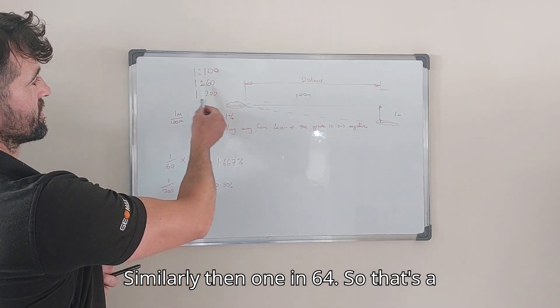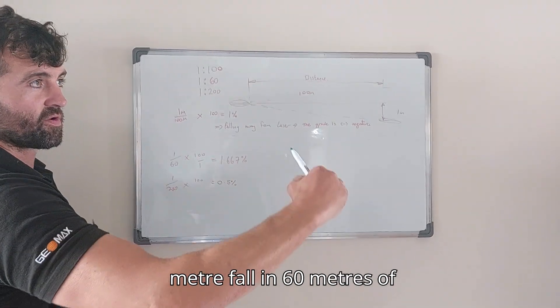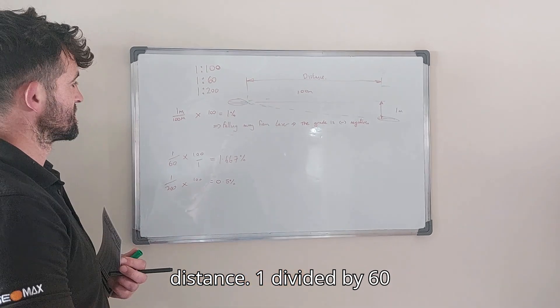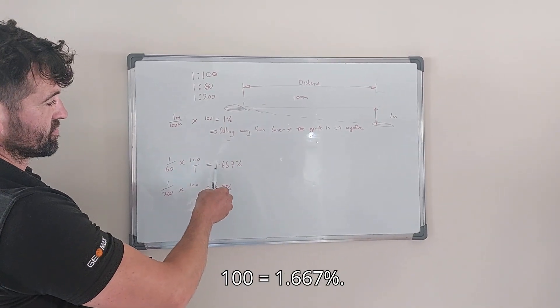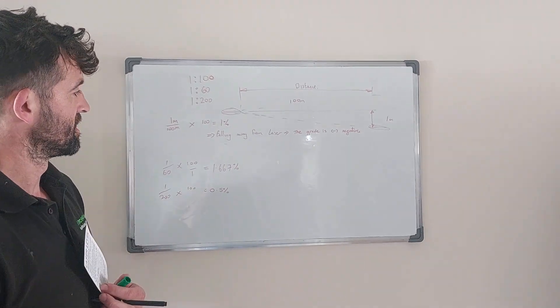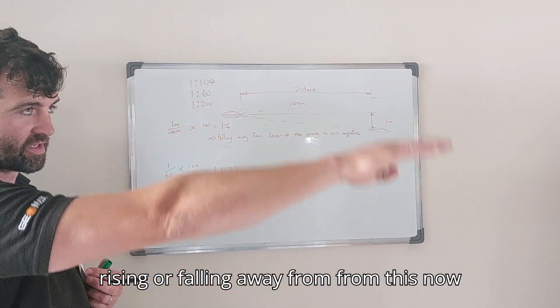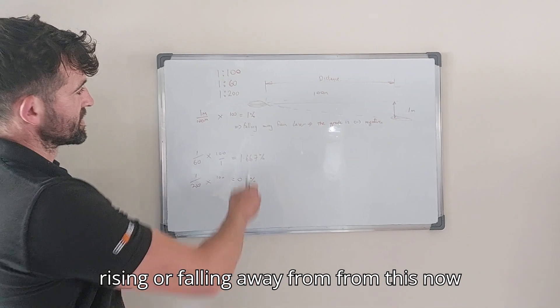Similarly then, 1 in 60 fall, so that's a meter fall and 60 meters of distance. 1 divided by 60 is 1.667% of a rise or fall, depending on if you're rising or falling away from this and that one here.